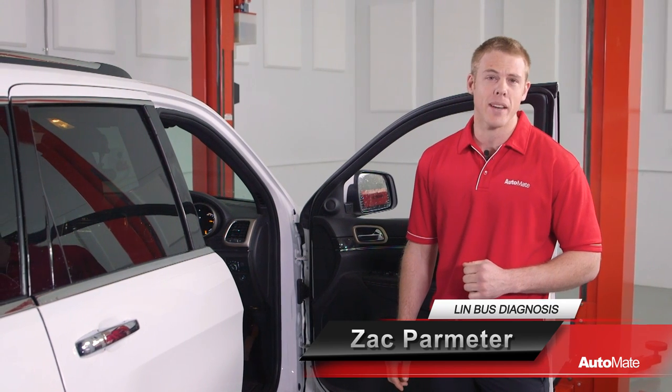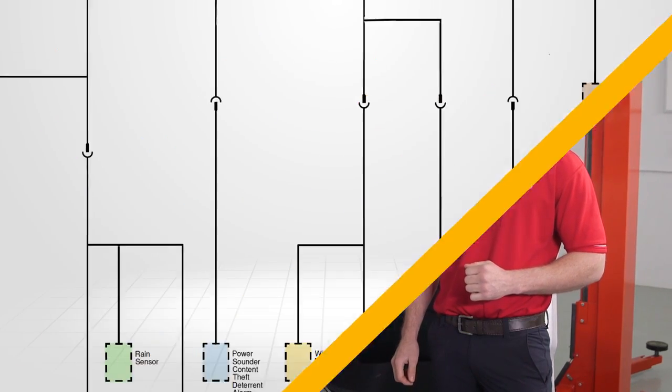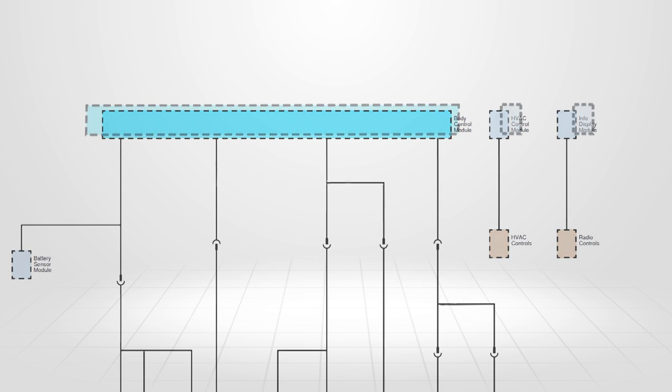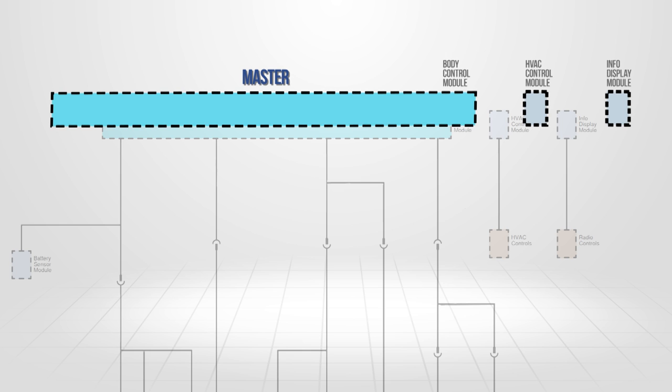G'day, I'm Zach, welcome to AutoMate. LIN works on a master-slave basis. The master in most cases will be the body control module or the module responsible for that node.